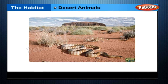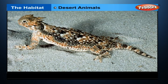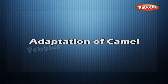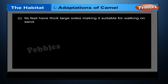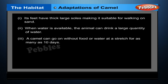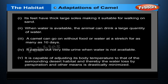In desert animals like snakes and lizards which live in hot places, water loss from the body is prevented as these animals have thick skin. Adaptations in desert animals have developed to help them withstand severe heat and scarcity of water. Camels have adapted and developed mechanisms to live in hot weather. Their feet have thick, large soles making them suitable for walking on sand. When water is available, the animal can drink a large quantity of water. A camel can go without food or water for as many as 10 days. It passes out very little urine when water is not available, and is capable of adjusting its body temperature to that of the surrounding desert habitat, drastically minimizing water loss by perspiration and other means.